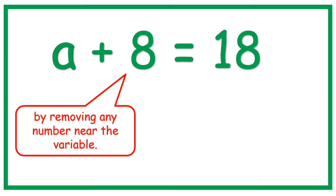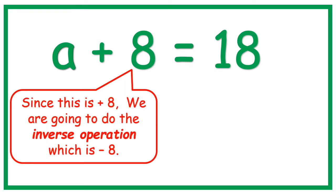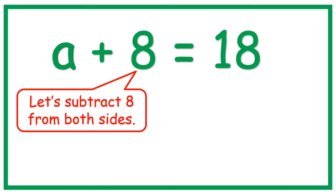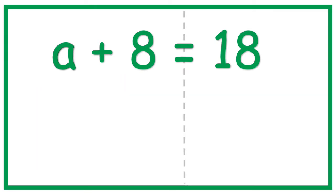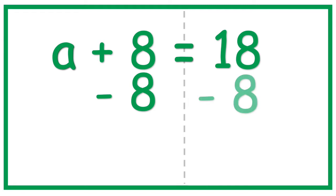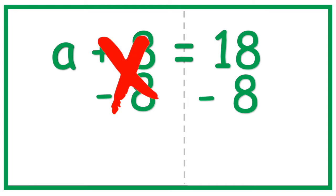By removing any number near the variable. Since this is plus 8, we are going to do the inverse operation which is minus 8. Let's subtract 8 from both sides. Remember that the equal sign divides the left side and the right side of the equation. So if we subtract 8 on the left side, we should subtract 8 on the right side also.